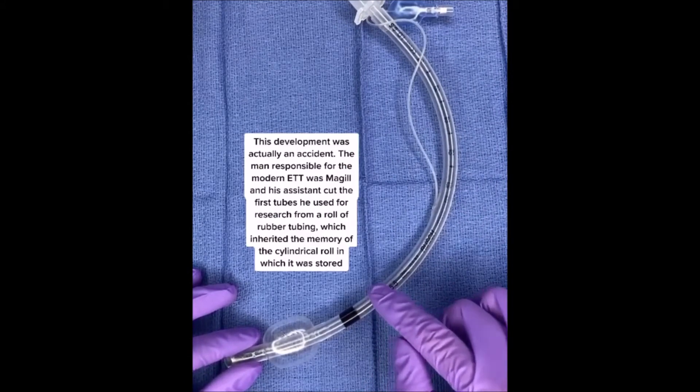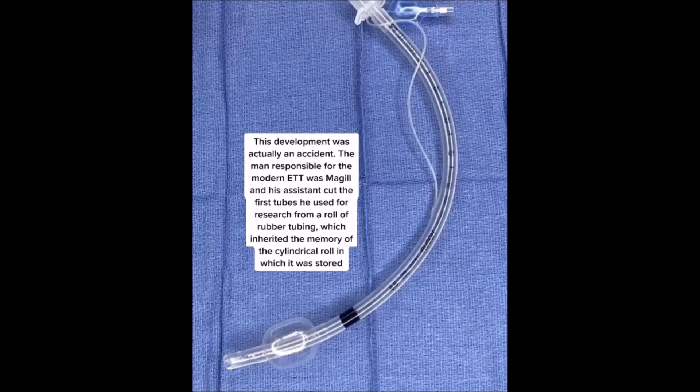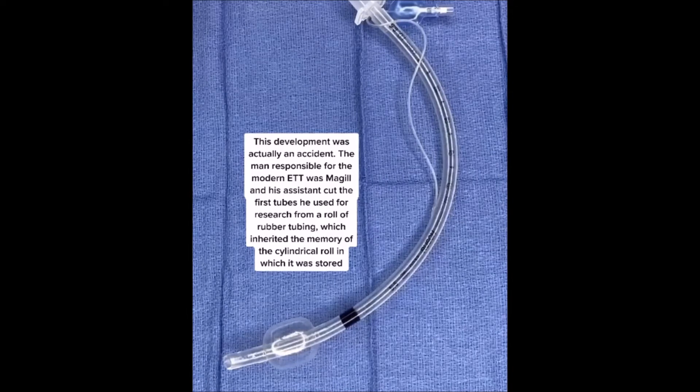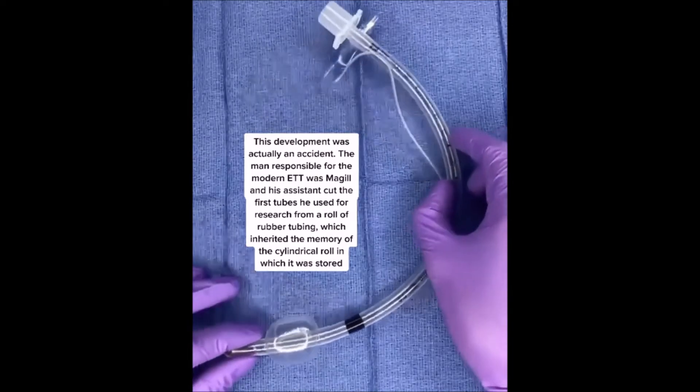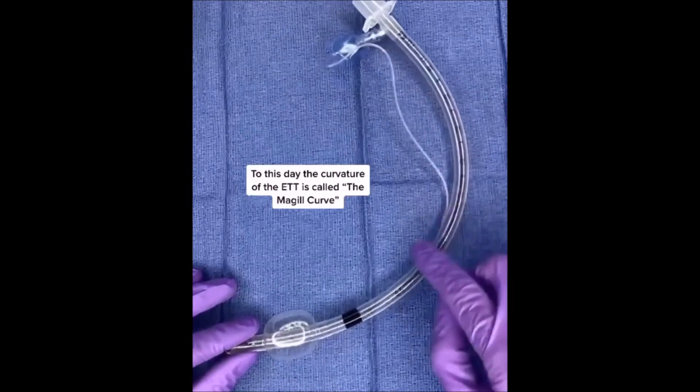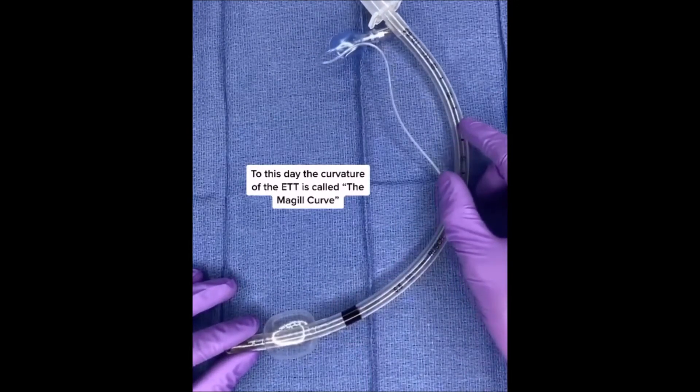This development was actually an accident. The man responsible for the modern ET tube was McGill, and his assistant cut the first tubes he used for research from a roll of rubber tubing, which inherited the memory of the cylindrical roll in which it was stored. To this day, the curvature of the ET tube is called the McGill curve.